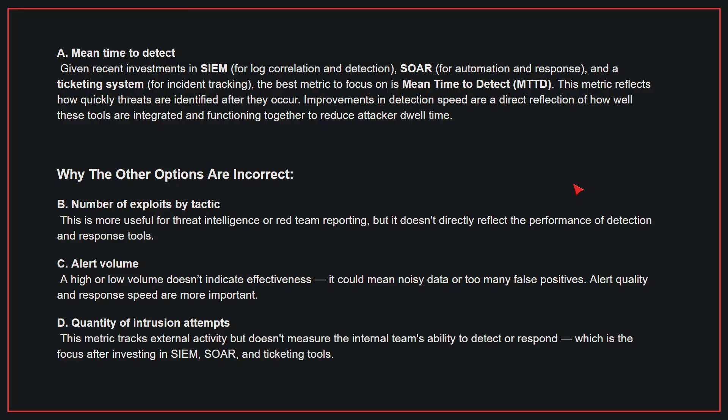Why the other options are incorrect? B: Number of exploits by tactic. This is more useful for threat intelligence or red team reporting but doesn't directly reflect the performance of detection and response tools. C: Alert volume. A high or low volume doesn't indicate effectiveness — it could mean noisy data or too many false positives. Alert quality and response speed are more important. D: Quantity of intrusion attempts. This metric tracks external activity but doesn't measure the internal team's ability to detect or respond, which is the focus after investing in SIEM, SOAR, and ticketing tools. Therefore, the correct answer is A.